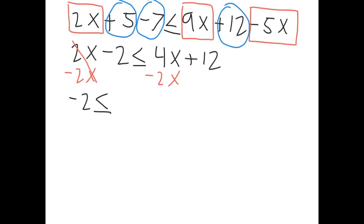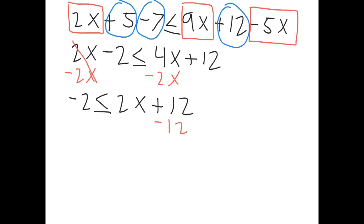On the right, 4x minus 2x is 2x, and plus twelve stays. Now we need to bring the twelve to the other side — it's positive, so we subtract it. Subtract twelve from both sides.